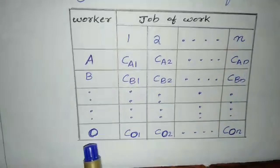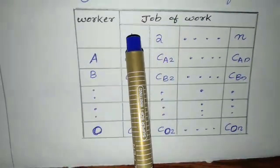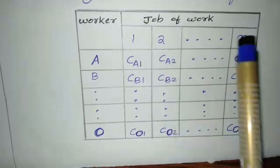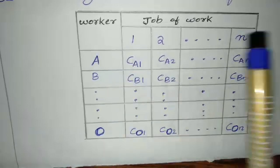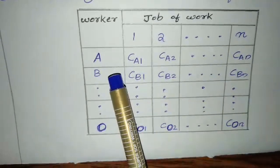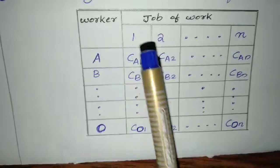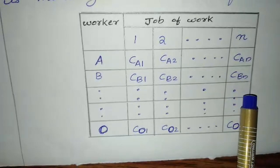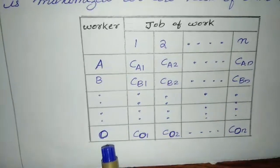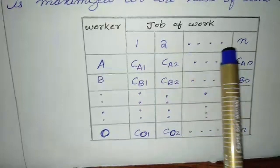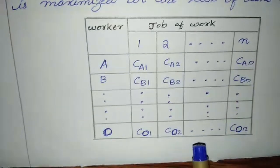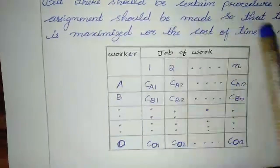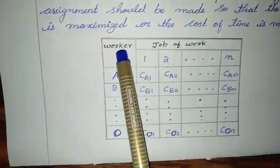From this table, worker A performs job 1 with cost C_A1, job 2 with cost C_A2, up to job n with cost C_An. Similarly, worker B performs job 1 with cost C_B1 up to job n with cost C_Bn. Worker n performs jobs 1, 2, 3 up to n with costs C_n1, C_n2, up to C_nn respectively. The main objective of the assignment problem is to find the optimal assignment for each worker.